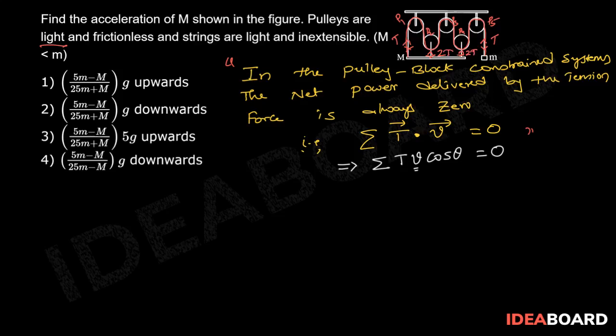Now, let us draw a free body diagram on capital M. Its weight capital MG acts vertically downwards and tension 5T acts vertically upwards. Let us suppose capital M is moving up with a velocity of V1.